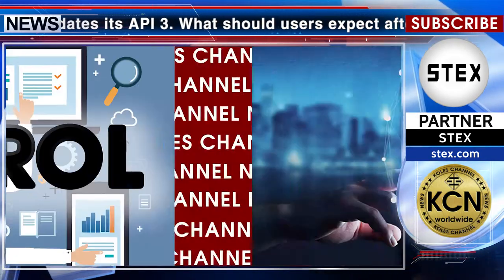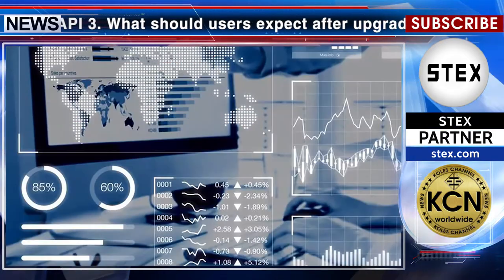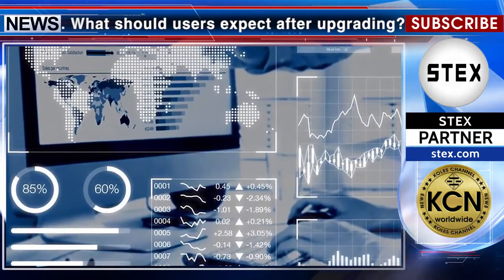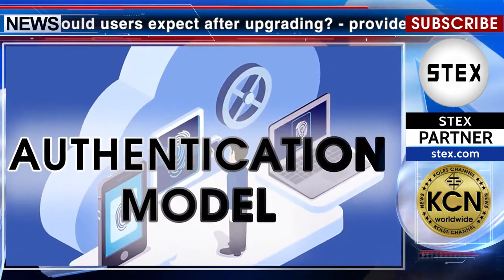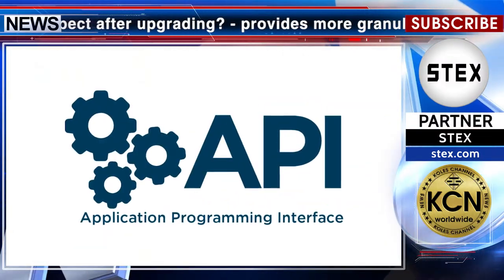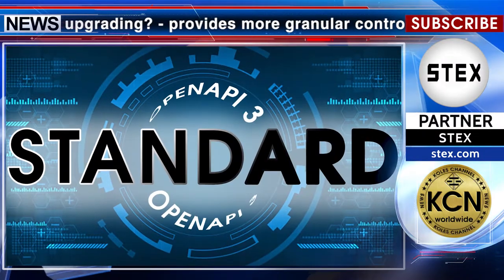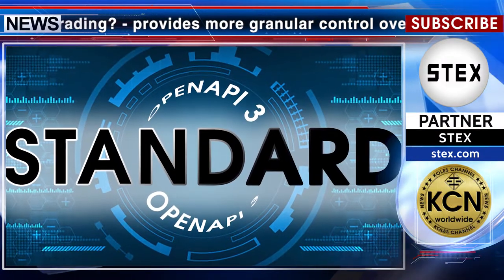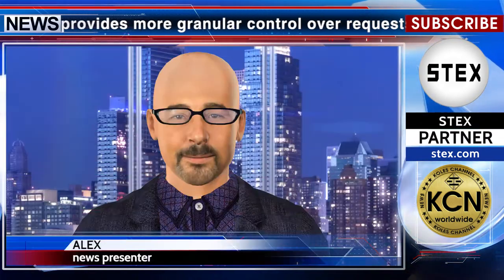Stex.com updates its API to version 3. What should users expect after upgrading? It provides more granular control over requests to provide exactly the expecting data in response. It implements a well-proven authentication model, OAuth 2, allowing to incorporate the API usage into literally any type of application. It is built over the industry standard OpenAPI 3 specification.